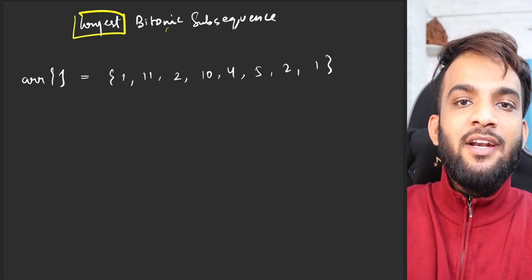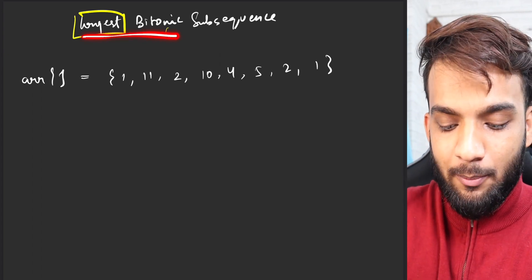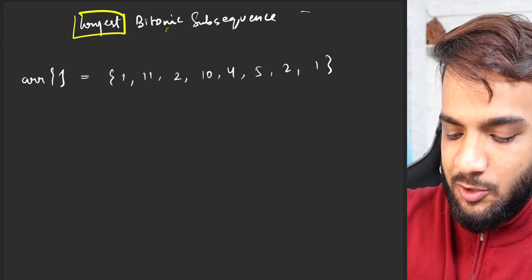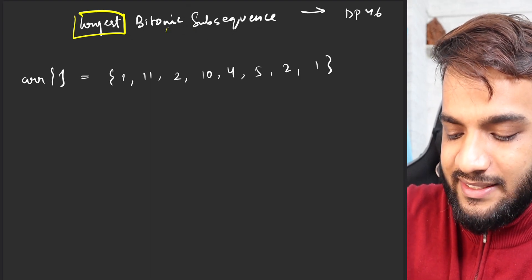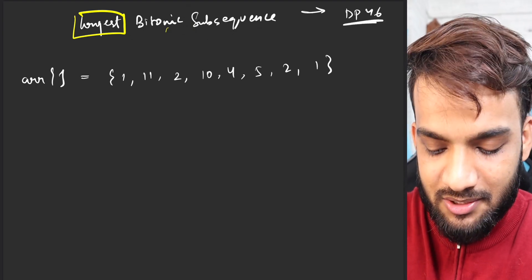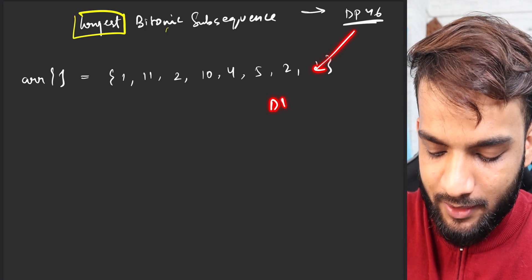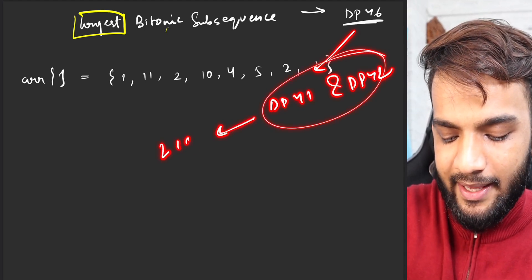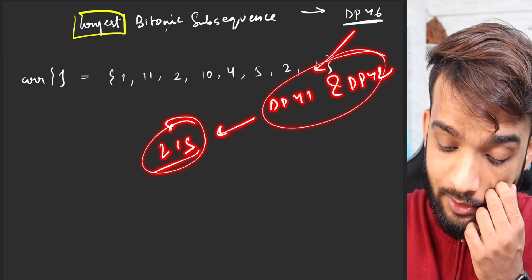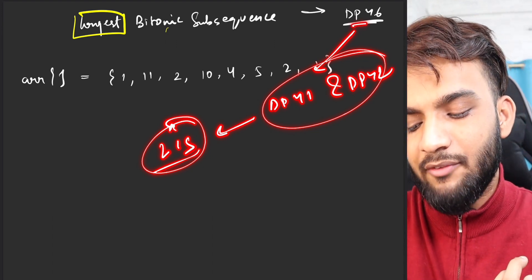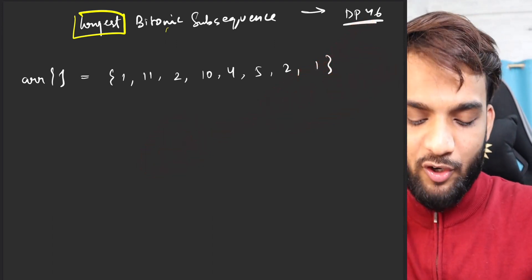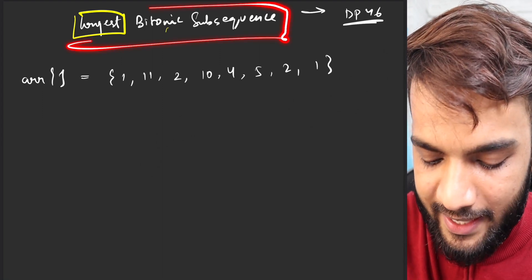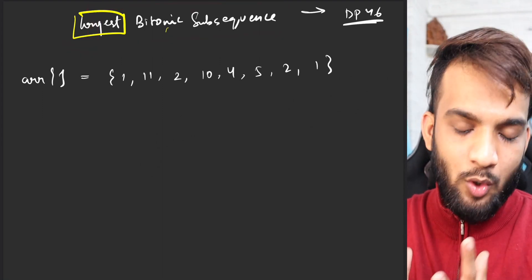Today we will be solving another problem: Longest Bitonic Subsequence, and this problem will be DP46. The prerequisites are definitely DP41 and DP42, which are based on LIS (Longest Increasing Subsequence). If you have not seen those, please go back and watch them before we start with DP46.